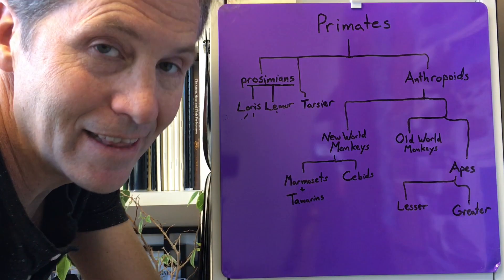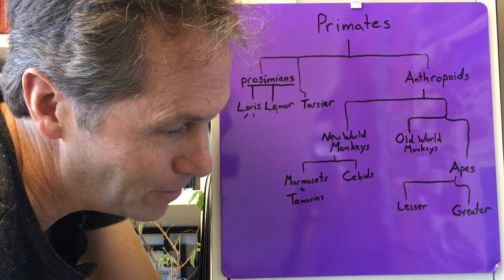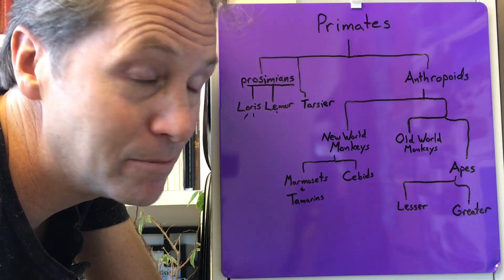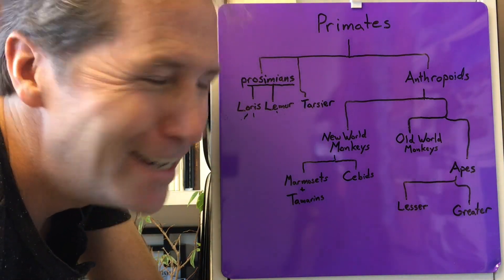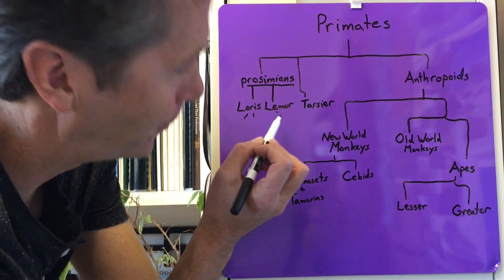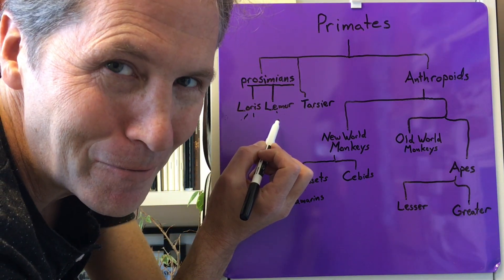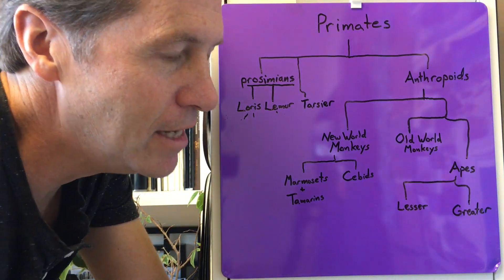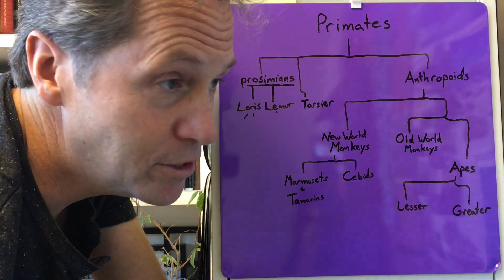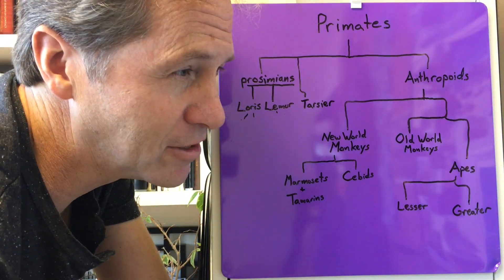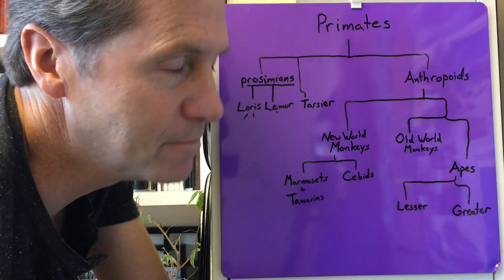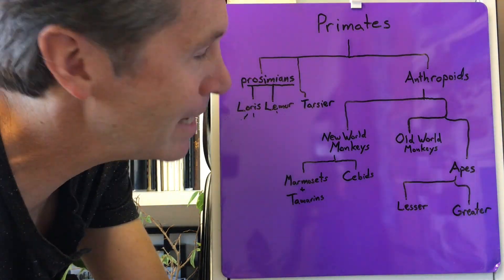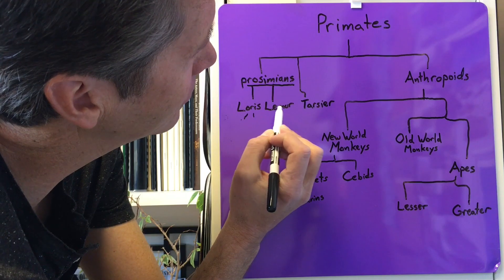Lemurs equal Madagascar. If you're curious about the types of lemurs, I highly suggest the movie Madagascar. The ringtail lemur is the best example. You also have the sifaka — the name looks like it should be pronounced 'sifaka' but it's 'shifak' — and they're kind of the masters of vertical clinging and leaping.